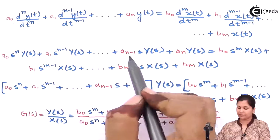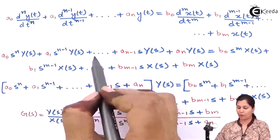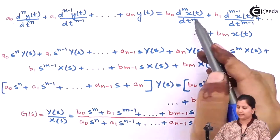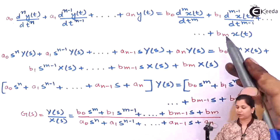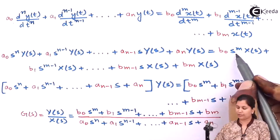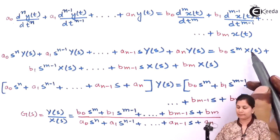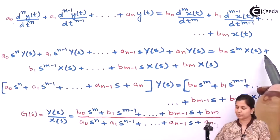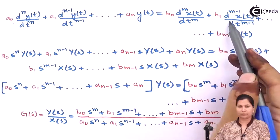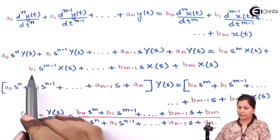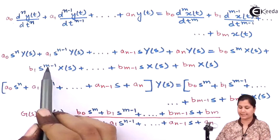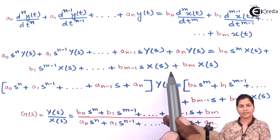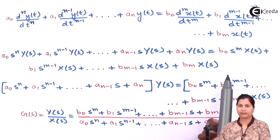Similarly, we take the Laplace transform of all the terms on the left hand side. The Laplace transform of the terms on the right hand side will be b0 times s to the power m times X(s), where X(s) is the Laplace transform of x(t), then b1 times s to the power m minus 1 times X(s), and similarly for all the remaining terms.